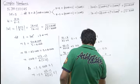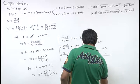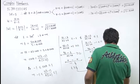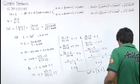That means mod of w square belongs to 1 by 9 to 1. So magnitude of w belongs to 1 by 3 to 1.